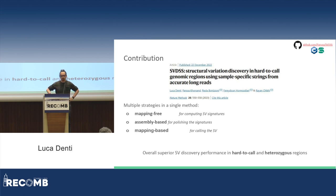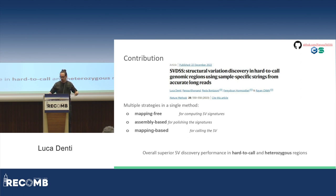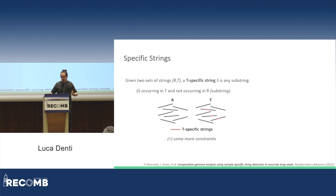SVDSS stands for Structural Variation Discovery from Sample-Specific Strings. In this approach, we combine multiple strategies in a single method. We take something from the mapping-free world for computing signatures for the structural variations, something from the assembly-based world for polishing the signatures, and something from the mapping world for effectively calling the structural variation. By merging all these strategies together, we were able to obtain superior accuracy, especially in hard-to-call and heterozygous regions of the genome.